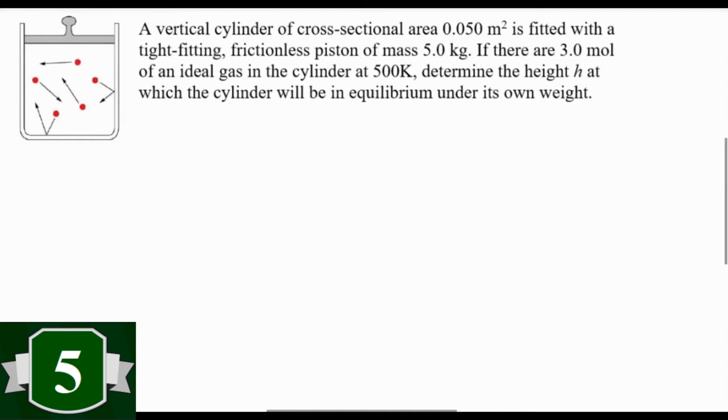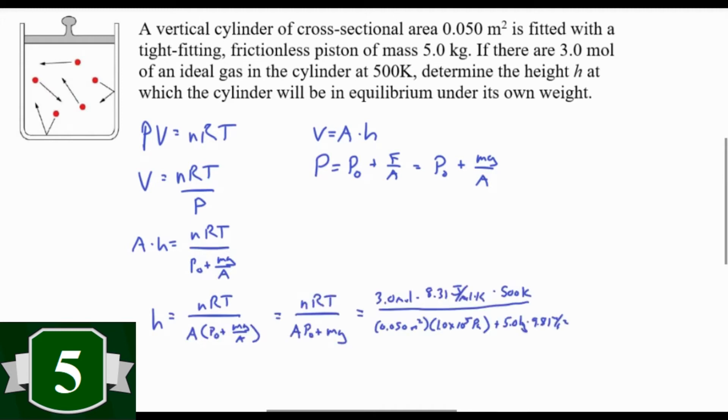Here we have a cylinder full of a gas with a tight-fitting lid that is free to move. We know the area and we know the mass of the lid, and we know there are three moles inside at 500 Kelvin. We want to know how high up the cylinder would be when it's in equilibrium under its own weight. So for starters, we're going to use PV equals nRT and solve that for volume. Now we know volume is area times height. Now for the pressure, we have both atmospheric pressure plus the pressure from the weight of the lid, which is force over area, that's weight mg over area. Plug those in and solve for height. Plug in your numbers and you are done. You get a very tall 2.47 meters.